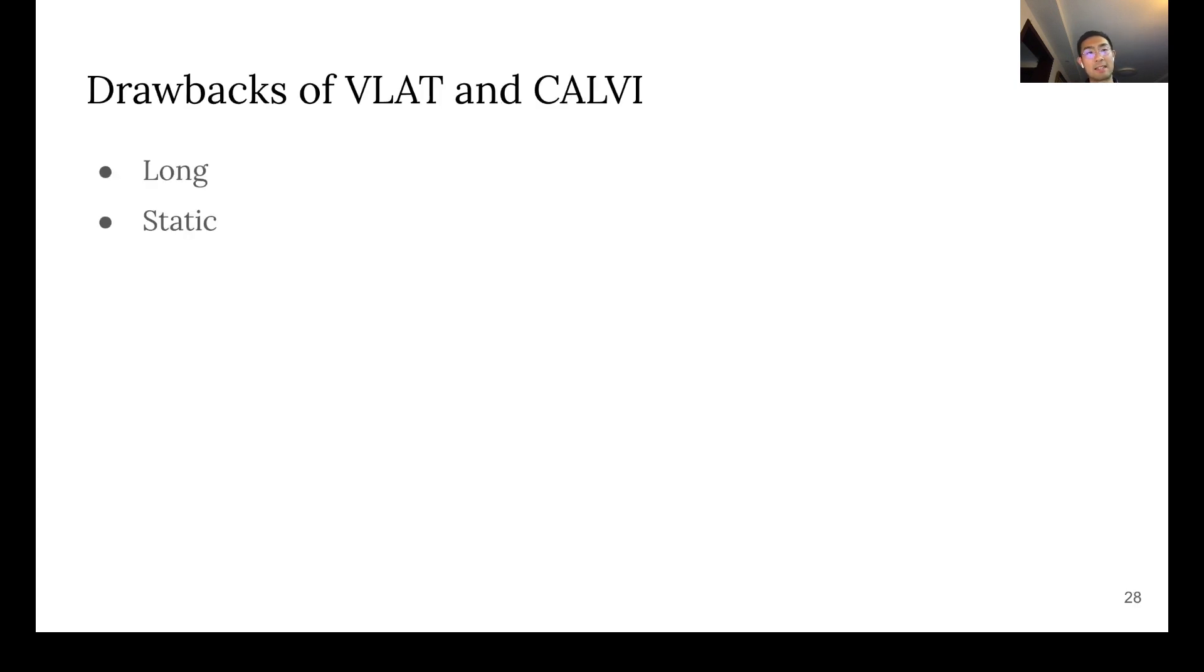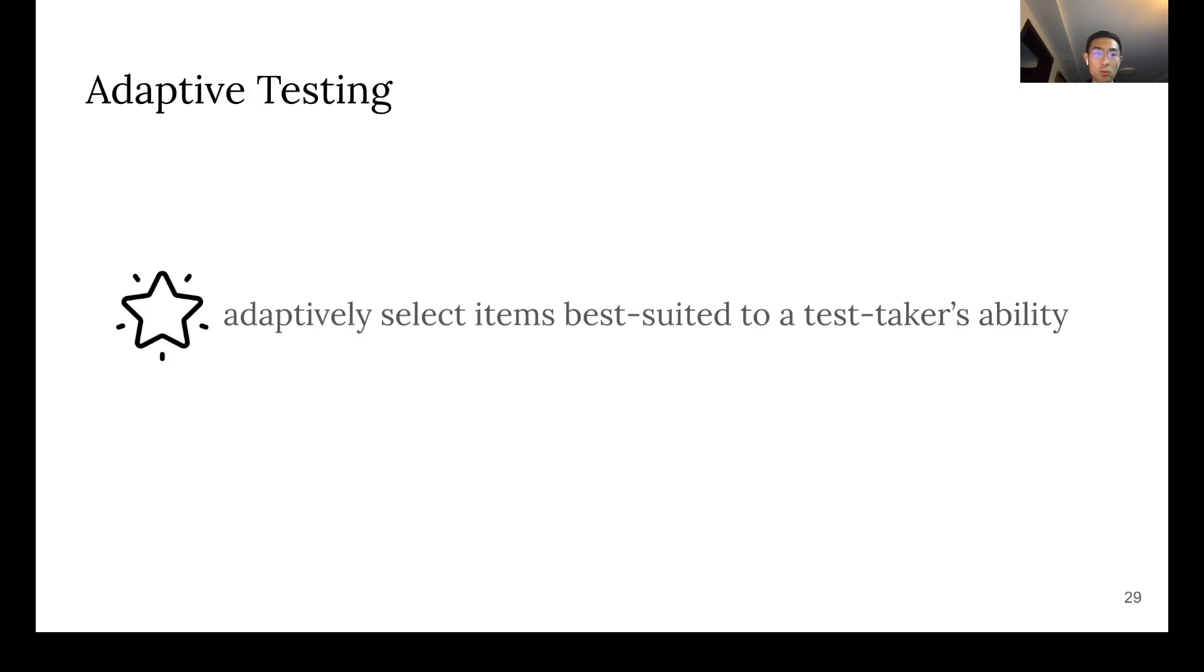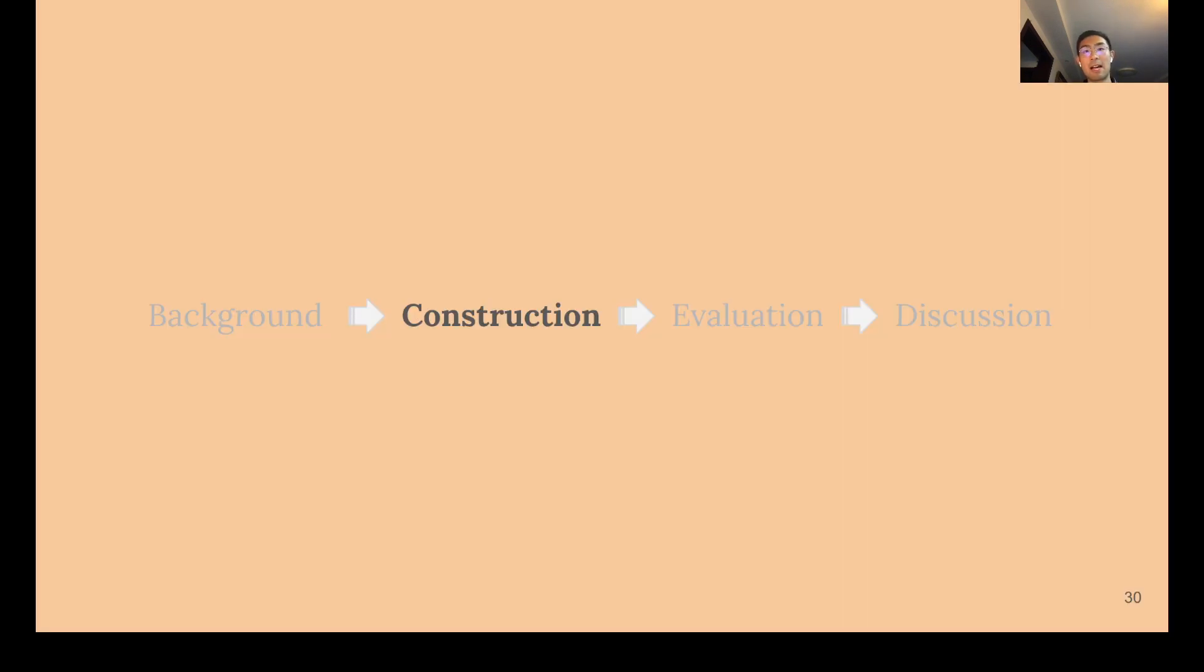The drawbacks of VLAT and CALVI are that they're long and static. And the solution to solve this challenge is to leverage adaptive testing, whose core idea is to adaptively select items best suited to a test taker's ability. In the next chapter, I will talk about how we constructed the adaptive tests.